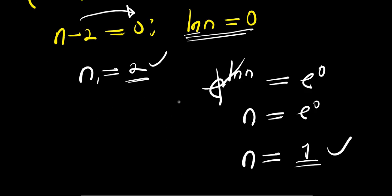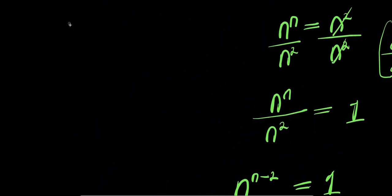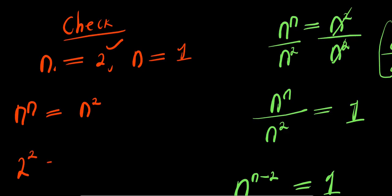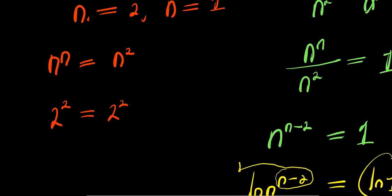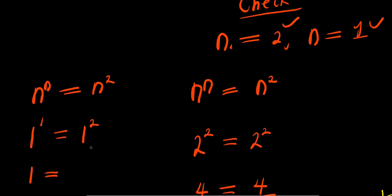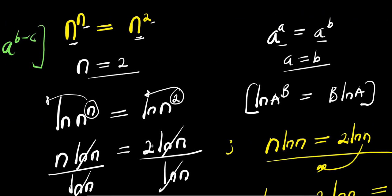Now we check both values. For n equals 2: 2 power 2 equals 2 power 2, which gives 4 equals 4 — satisfied. For n equals 1: 1 power 1 equals 1 power 2, which gives 1 equals 1 — also satisfied. So both solutions are valid. That is how you solve for all values of n. Thank you and goodbye.